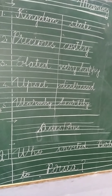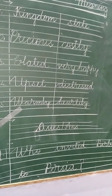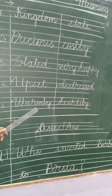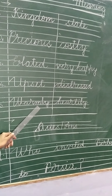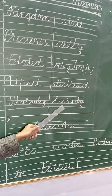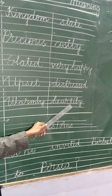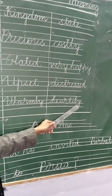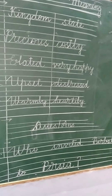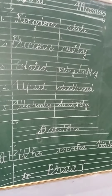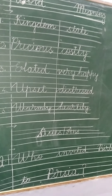Number 5: warmly — W-A-R-M-L-Y. Warmly. The meaning of warmly is heartily — H-E-A-R-T-I-L-Y. So these word meanings have been completed.